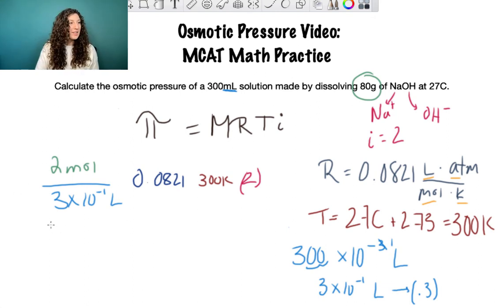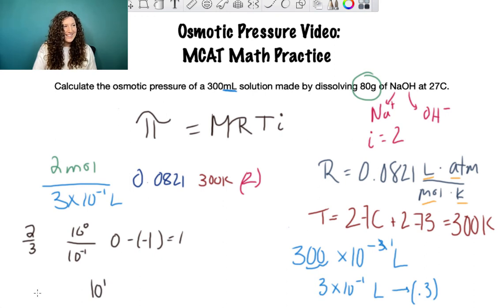Let's start with the molarity. We want to separate the mantissa from the exponent and do the division separately. So 2 divided by 3 and 10^0 divided by 10^-1. When we divide exponents we subtract: 0 minus minus 1 equals 1. So our exponent is 10^1. For the mantissa, 2 thirds becomes 0.67. It's good to know your basic fractions. So 0.67 times 10^1, we move the decimal over 1 to be 6.7 molar.